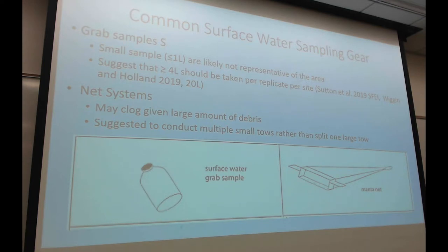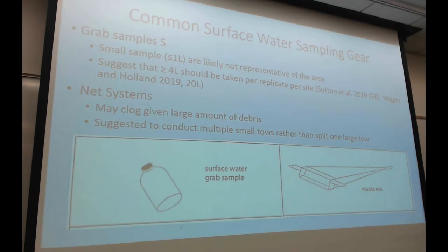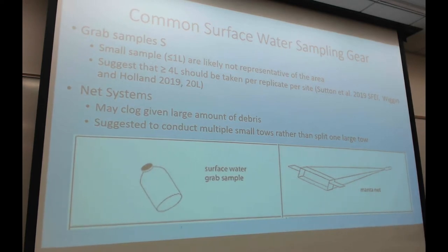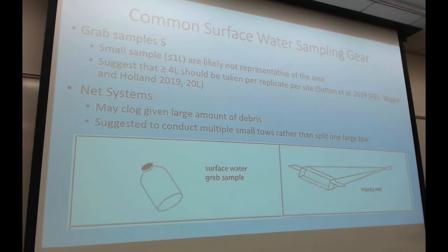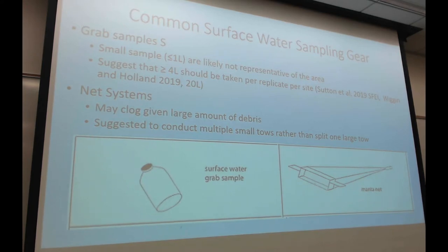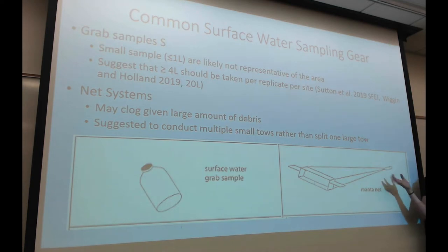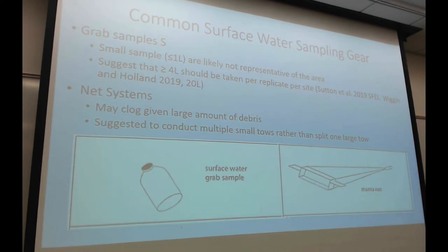Net systems may clog given the large amount of debris you're taking in, and then there's the question of how to deal with that. You can't easily separate them apart without potential loss, and counting only a subsample might not be representative of what you had in the whole system. They suggest it might just be better to do shorter tows rather than a really long tow where you're getting a lot of debris.